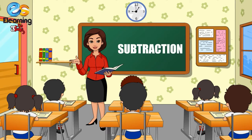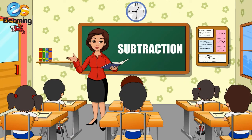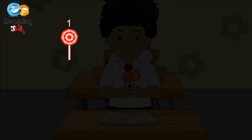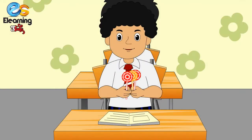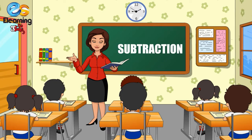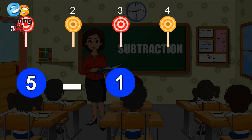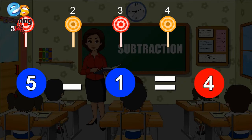Puneet, how many lollipops are left with you? Let's count — one, two, three, four. Four lollipops. Now give one lollipop to Jay. How many lollipops are left? One, two, three. Three lollipops! This is what subtraction is all about. From five lollipops, Sharada took away one, so Puneet was left with four. Five minus one is equal to four.